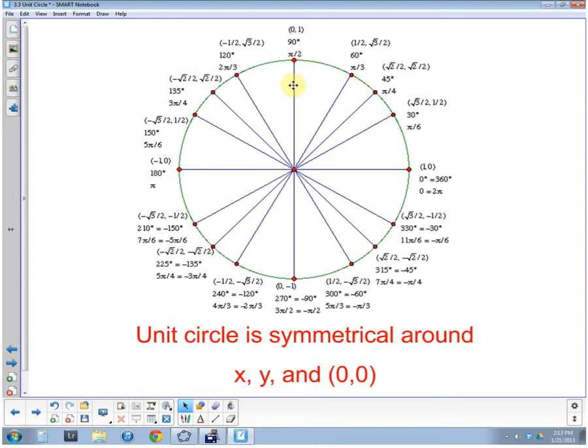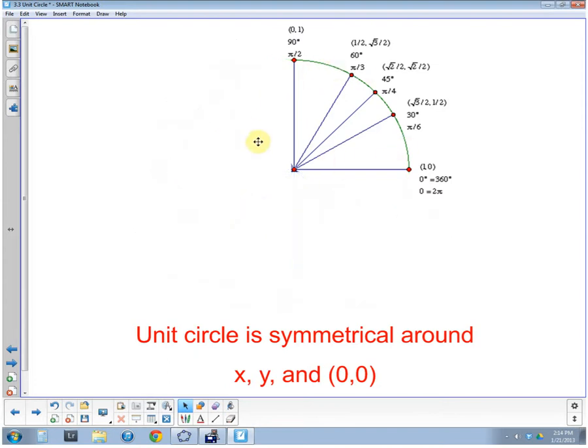It's got all these measurements that we've looked at before, 30, 45, 60, and 90. And because it's symmetrical about the origin, the x-axis, and the y-axis, we really only have to focus on the first quadrant of this. If we understand all of these, we should be able to use what we've learned in algebra to get the rest of the functions values.